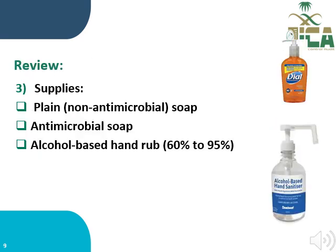Number three, the supplies — it should also be mentioned in the policy. The supplies to be used include plain soap, antimicrobial soap, and alcohol-based hand rub. Their definitions should be mentioned, along with the percentage or concentration of the alcohol-based hand rub. All of this should be reviewed in the policy and procedure for the hand hygiene program.